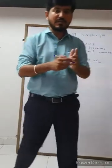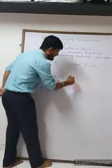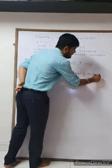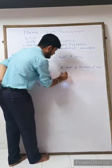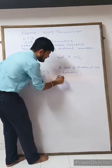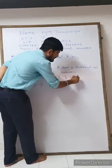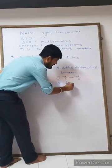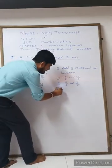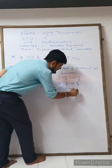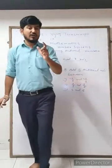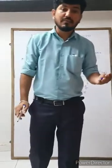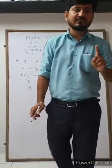Between two rational numbers we can insert many numbers. Now here is your assignment — insert five rational numbers between: first, minus three by two and minus two by three; second, three by five and three by six; third, four and six. Try these on your own. In the next video we will discuss rational numbers, how to convert a rational number into a decimal, and how to convert a decimal back into a rational number.